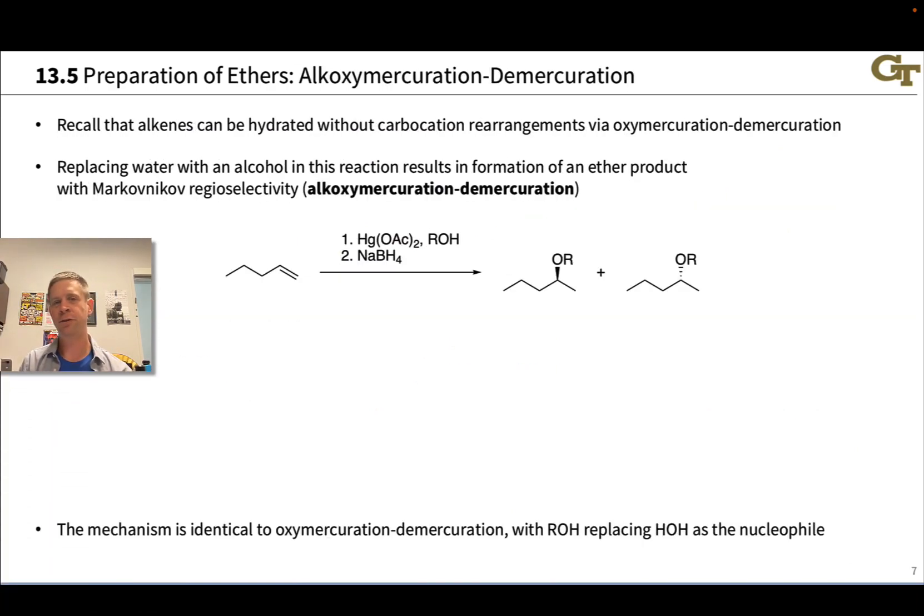We can also create ethers using alkene addition reactions and adapt a reaction we've seen previously, oxymercuration-demercuration, to establish an alkoxy group rather than a hydroxy group. And all we have to do to adapt the reaction is swap out water, which was the nucleophile in oxymercuration, with an alcohol, which is the nucleophile in alkoxymercuration. And this is a Markovnikov method. So the alkoxy group ends up linked to the more substituted carbon in the alkene and H to the less substituted carbon. And this occurs without carbocation rearrangements.